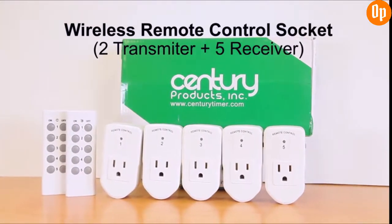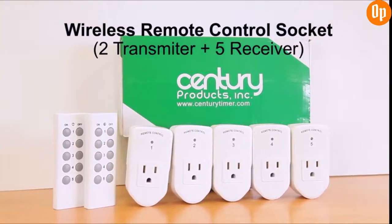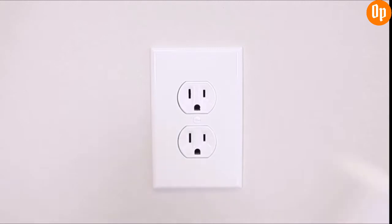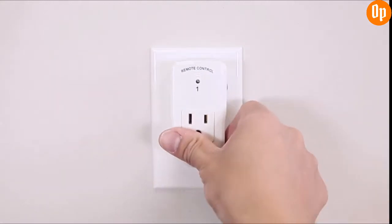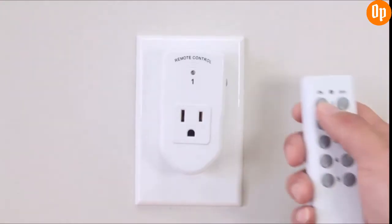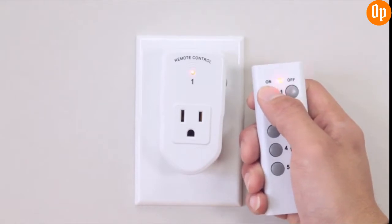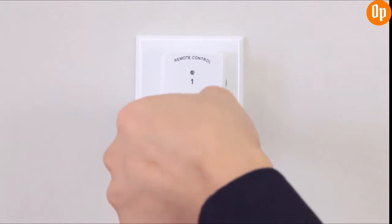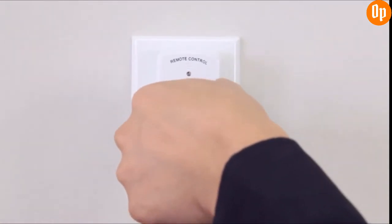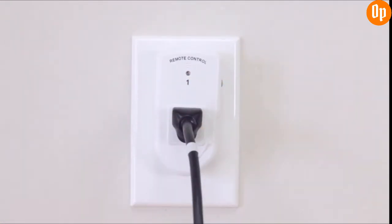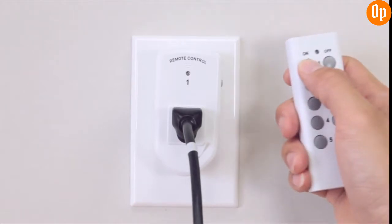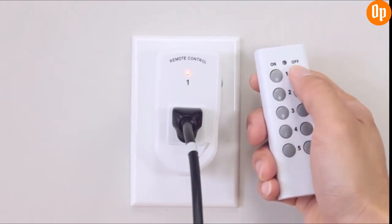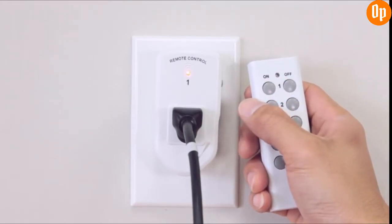This is a Sentry wireless remote control socket. This product consists of one transmitter and several socket receivers. The outlets can be manually operated or via the handy remote control. When the appliance is plugged into the socket receiver, you can use the remote control to turn it on and off. All remote control socket units have been pre-programmed and can be used immediately.